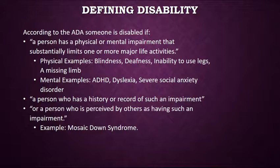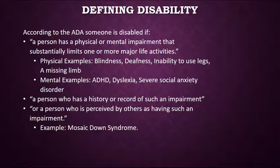According to the Americans with Disabilities Act, also known as the ADA, someone is disabled if they have a physical or mental impairment that substantially limits one or more major life activities. That definition has been extended since the ADA came into effect in the early 1990s. Physical examples include blindness, deafness, the inability to use one's legs, a missing limb. Mental disability examples include ADHD, dyslexia, severe social anxiety disorder, and various learning disorders.